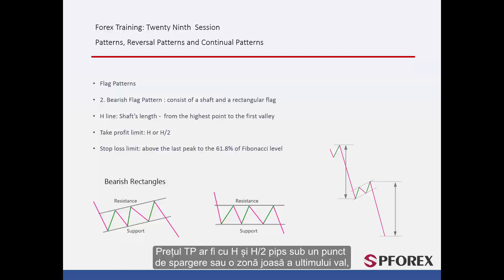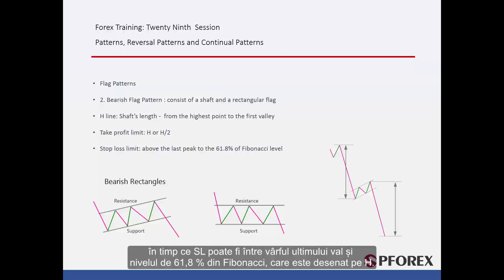TP price would be H and H2 pips below a breakout point or a valley of the last wave, while SL can be between the peak of the last wave and the 61.8% level of the Fibonacci drawn on H.